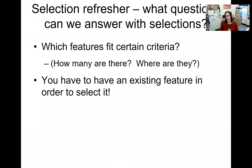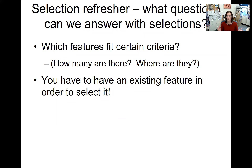With selections, you can ask how many features fit this criteria, like how many schools fit a certain criteria, and where are they located. All of that information is already in the shape file — you're looking within existing data for features that fit your criteria. But you have to have existing features in order to select them. We are not creating new shape files or new features to describe or answer a particular problem.